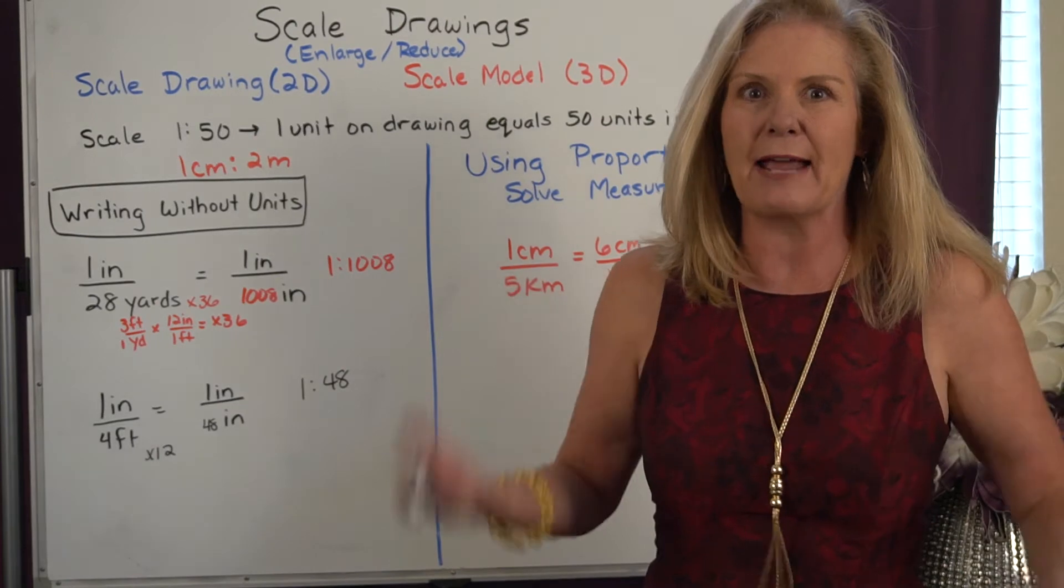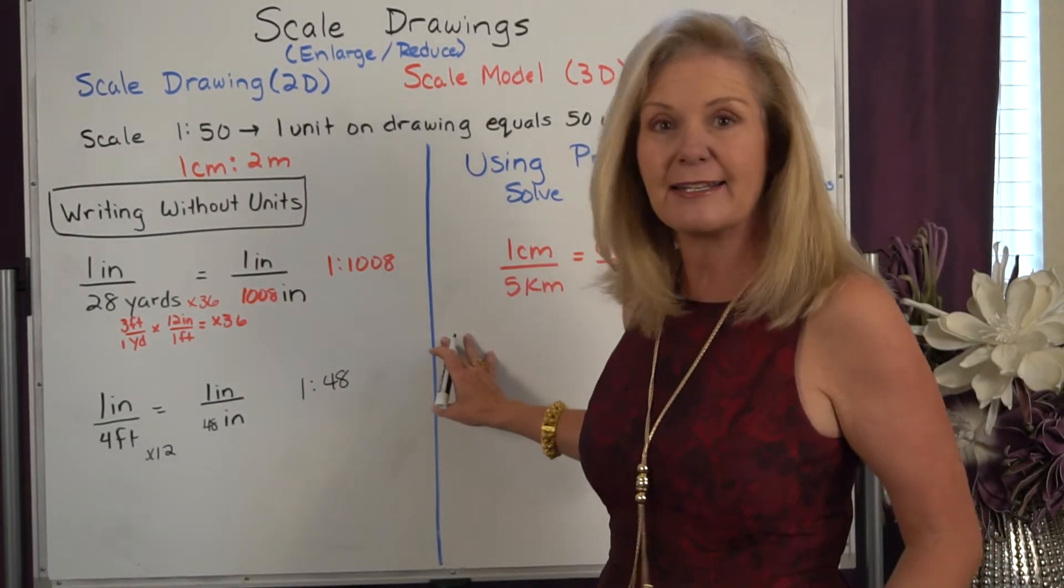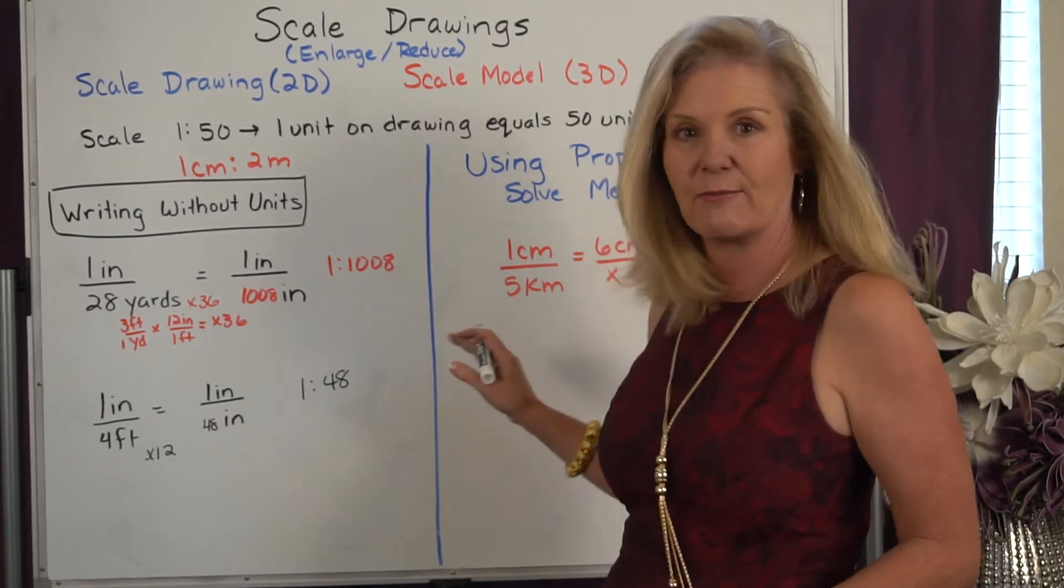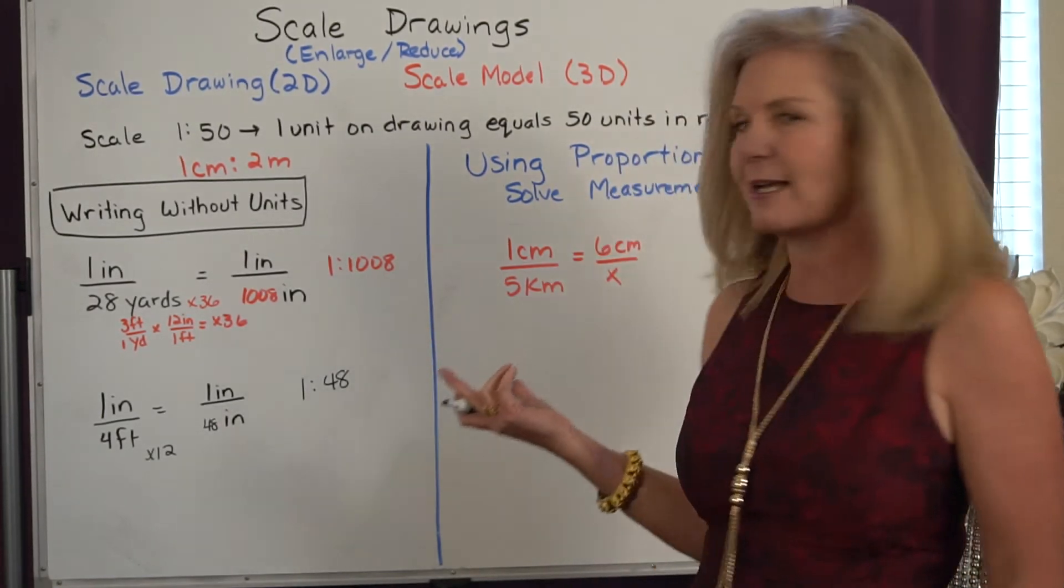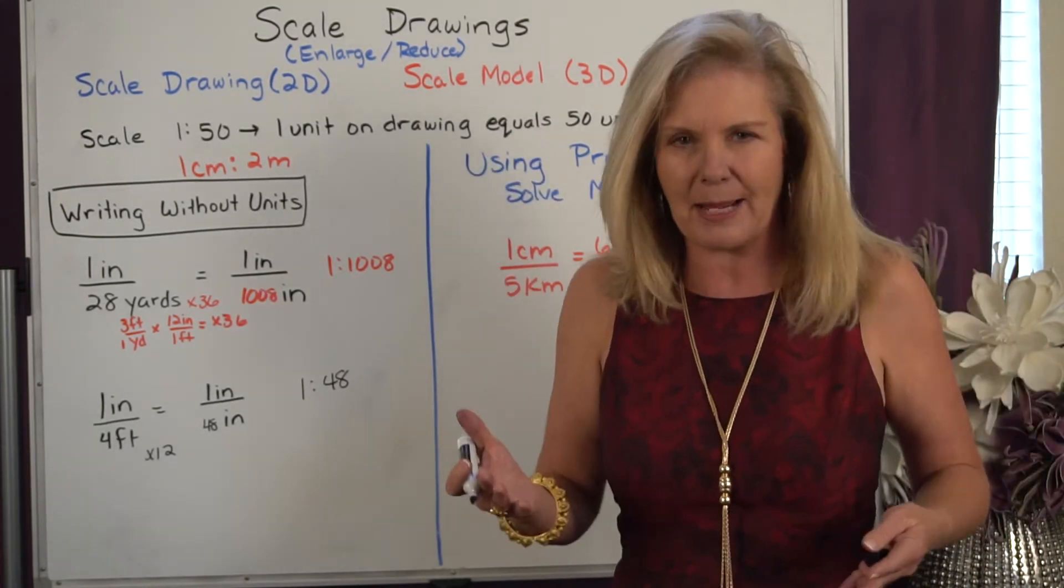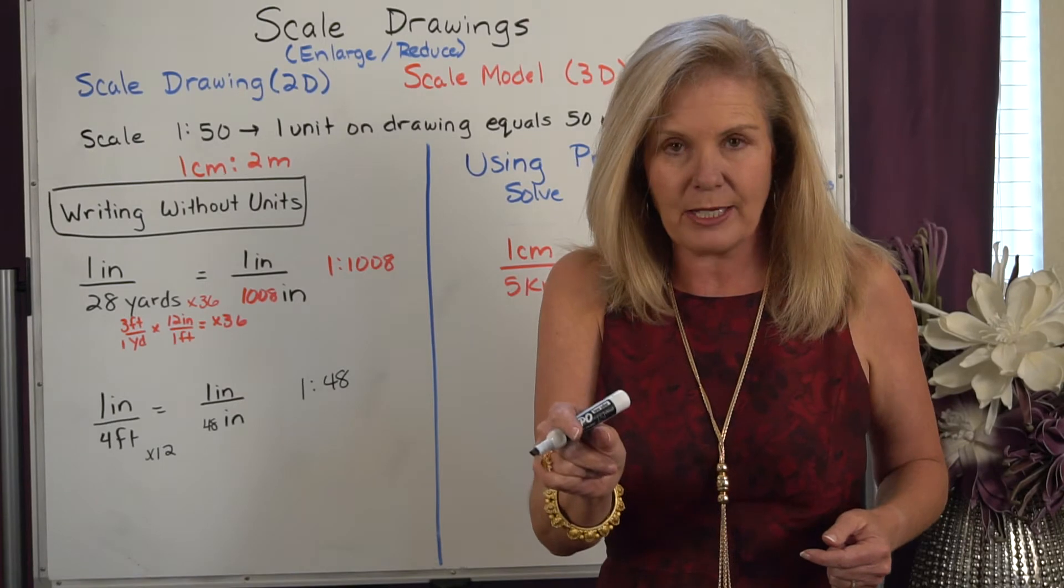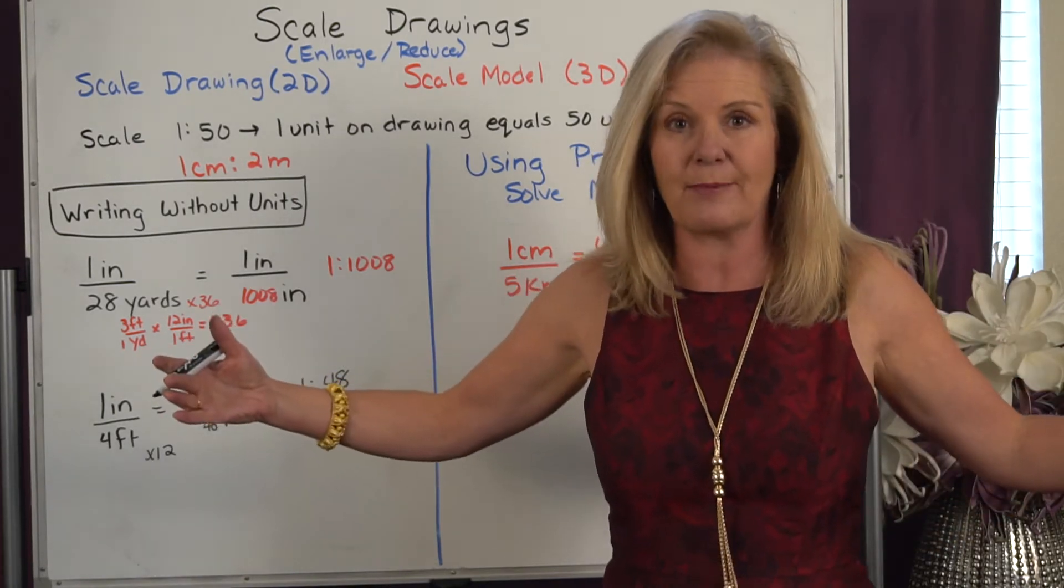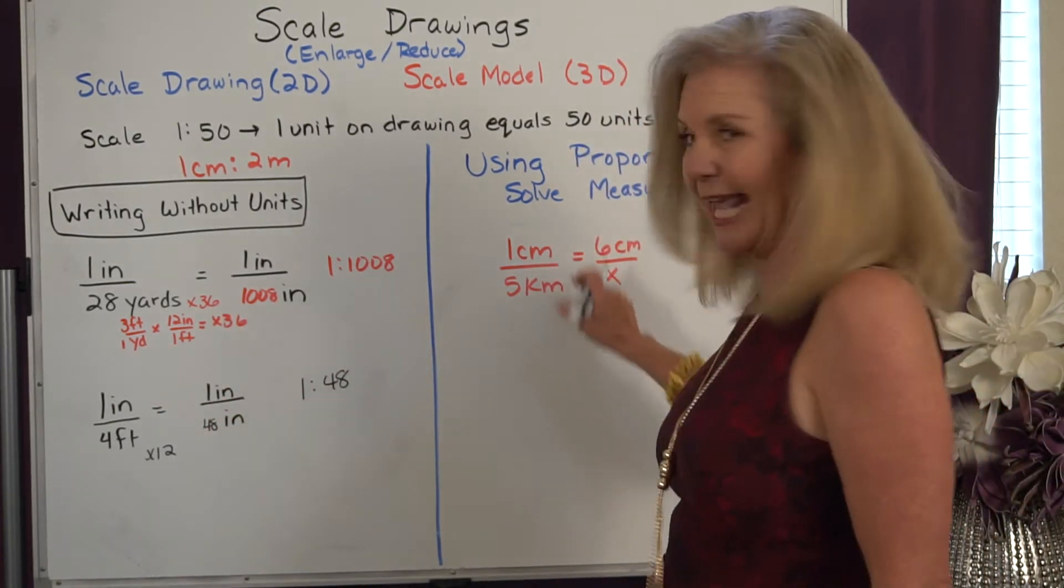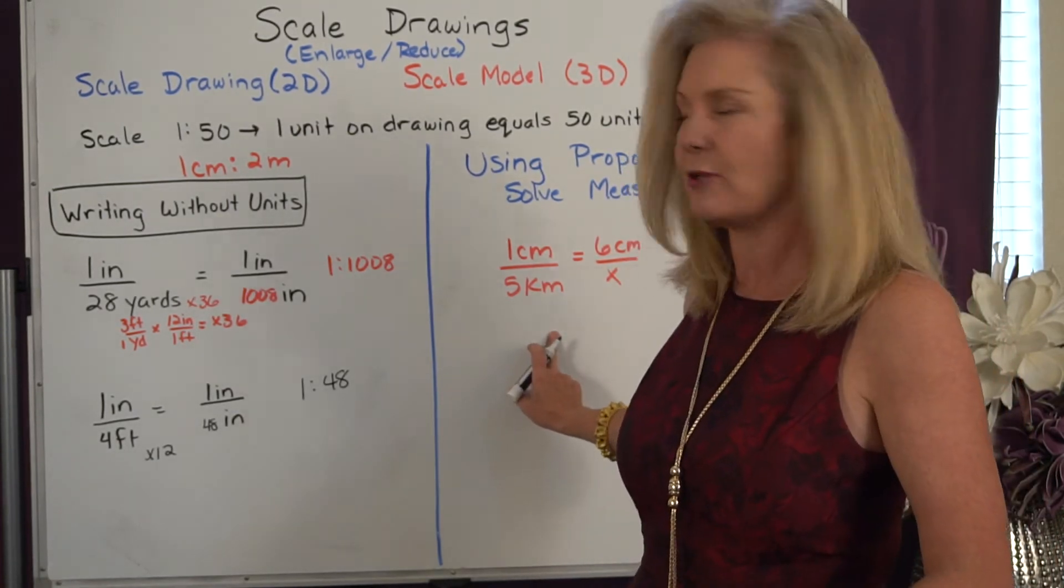Now it doesn't mean we never work with ratios that are different units of measure. I can have one centimeter is to five kilometers, it simply means on my map if I measure out one centimeter it's equal to five kilometers in real life, so you can have different units of measure, I just would need to write those units.